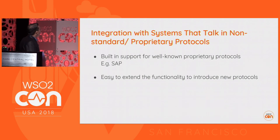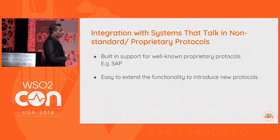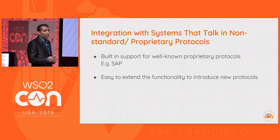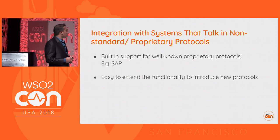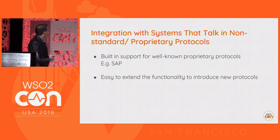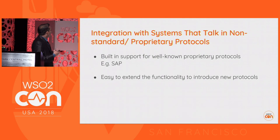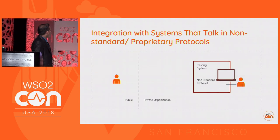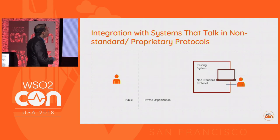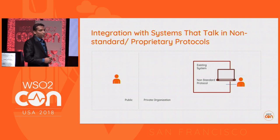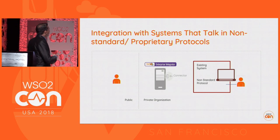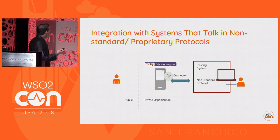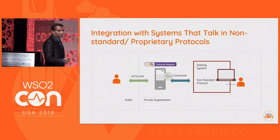Now let's see how we can do integration with systems that talk in non-standard protocols. For most well-known proprietary protocols we have built-in support — for example, we have a SAP adapter to integrate with SAP systems. If there's a system for which we don't have built-in support, we can implement custom functionality and plug it into the runtime. We write a connector and plug it into the Enterprise Integrator runtime. That connector is capable of connecting with the existing system, and then we can expose an HTTP API similarly.